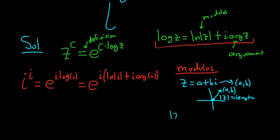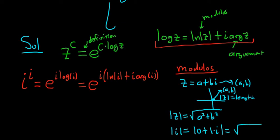So what is the definition? You can use the Pythagorean theorem to come up with the following formula. It's the square root of a squared plus b squared. In this particular problem, we have the modulus of i. We can think of i as 0 plus 1 times i. So this is equal to the square root of 0 squared plus 1 squared, so you get 1. So the modulus of i is 1.